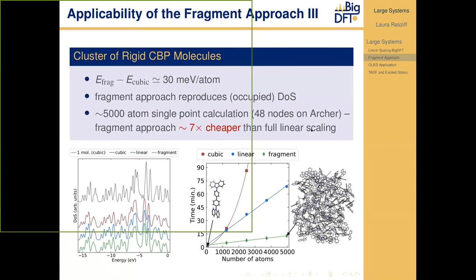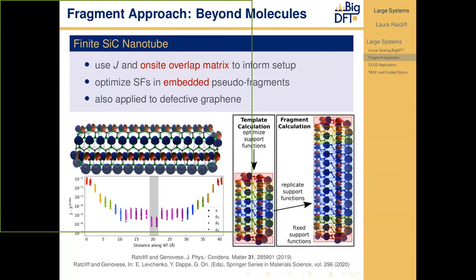To show an example in a system ideally suited: here we have a cluster of rigid molecules of CBP, used for OLEDs. The molecules are rigid so there are no distortions, and they are relatively weakly interacting. The fragment approach reproduces the density of states very well, and we also have a small error compared to the cubic scaling approach in terms of total energy. For a 5000-atom cluster of CBP, we end up with a calculation about seven times cheaper than the linear scaling approach.